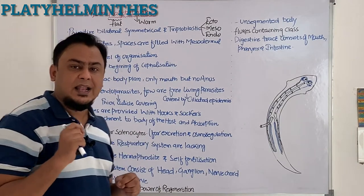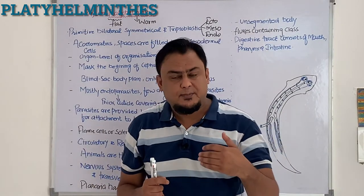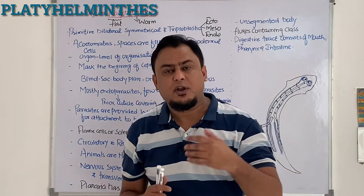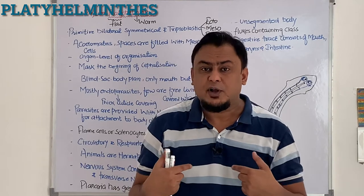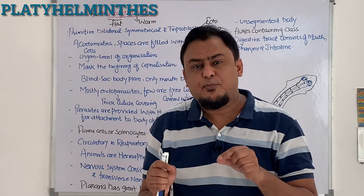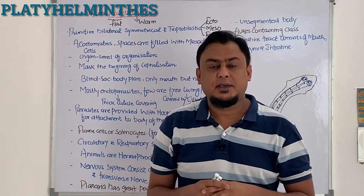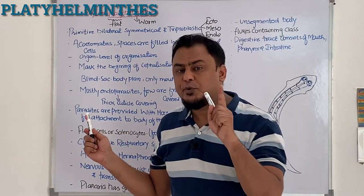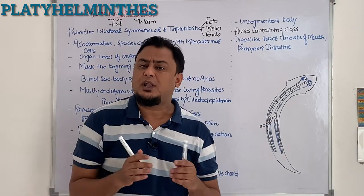Number two: this phylum consists of acoelomates. As I mentioned before, in phylum Porifera or phylum Cnidaria there was a true gastrovascular cavity. In sponges we call it the spongocoel, and in Cnidaria we call it the coelenteron. But in Platyhelminthes the coelom is totally absent — that is a very important feature.